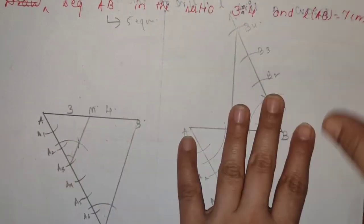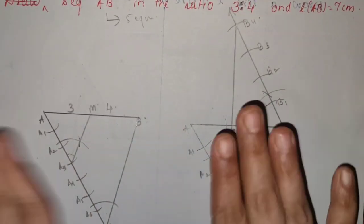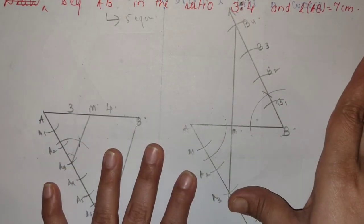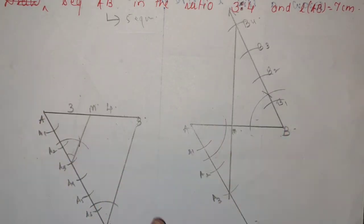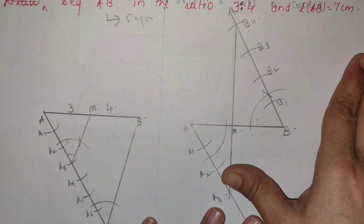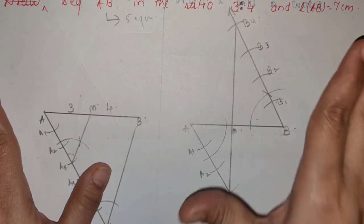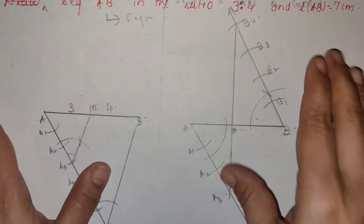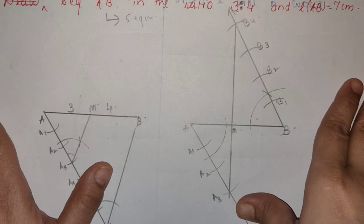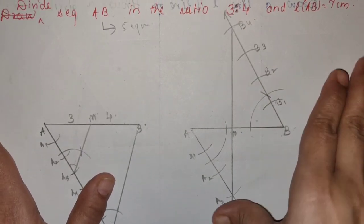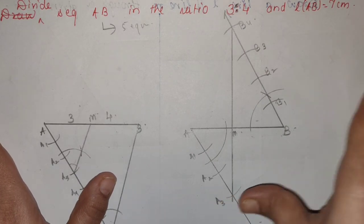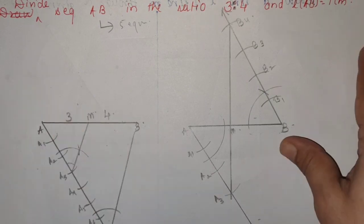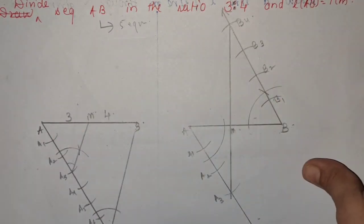So students, I have covered all the basic questions before going to the main exercise, because I want you to know all the basic geometric construction. Until you know the basics, you cannot directly draw tangents and similar triangles. Hope you have understood — you will construct in your notebook twice for practice. Remember, never skip these questions because construction is very scoring. In the next video, I will start with the tangent. Till then, practice this. Bye, take care.